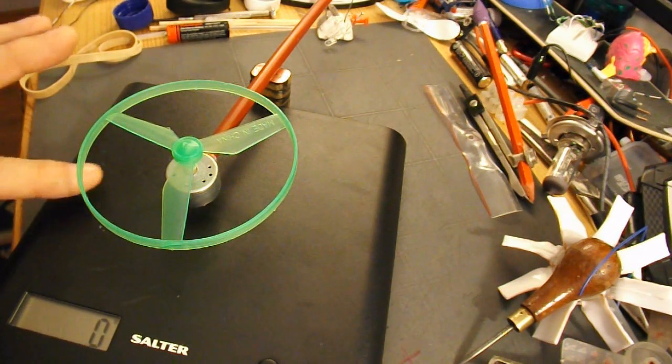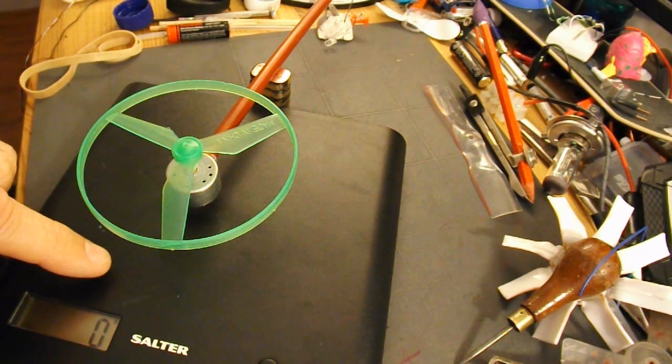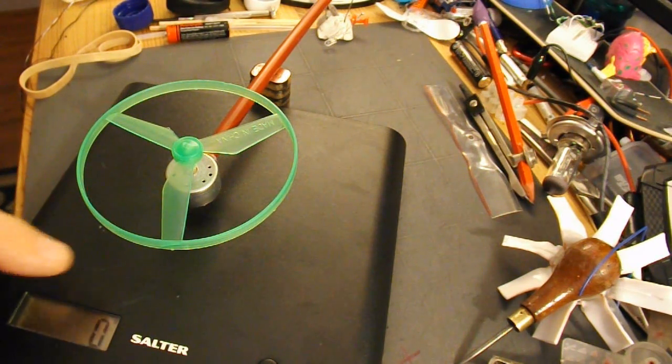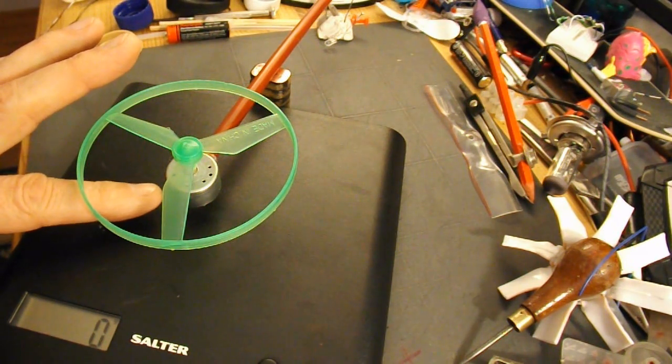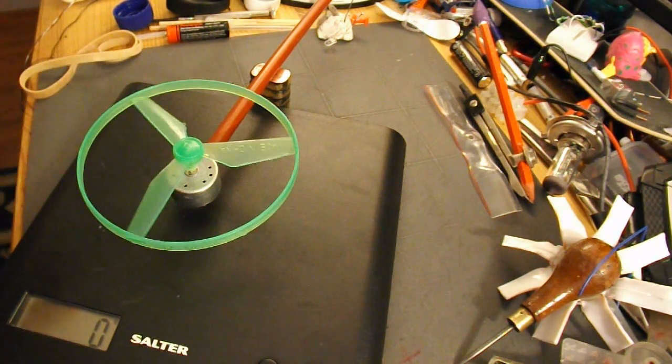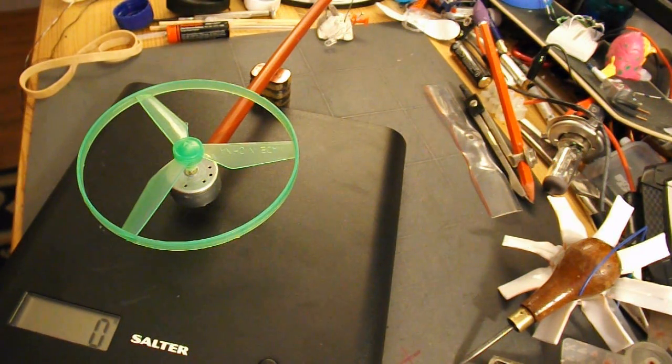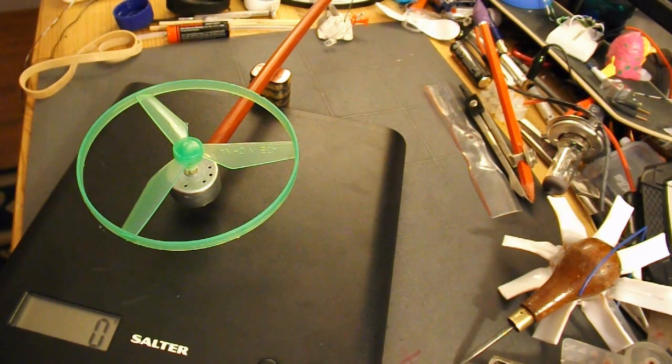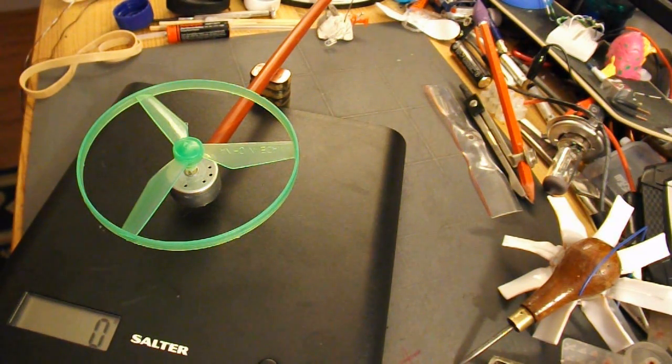People are saying the downwash from the propeller is pushing down on the scales, which it is. But what we want to see is, does the propeller or does the motor lift off the scales? And if it doesn't lift off the scales, then it hasn't got enough power to power a helicopter, because it's got to lift the weight of the motor, plus the batteries, plus a helicopter.